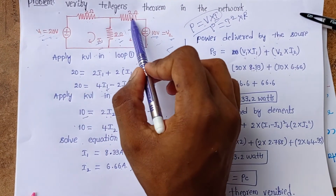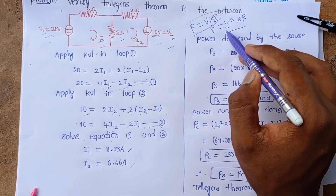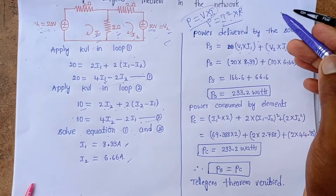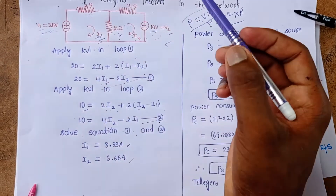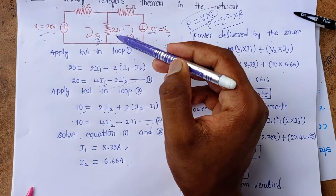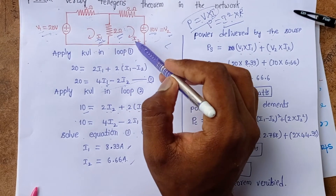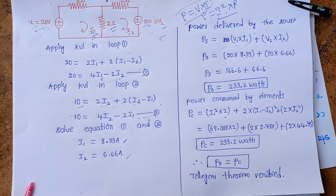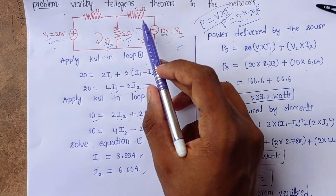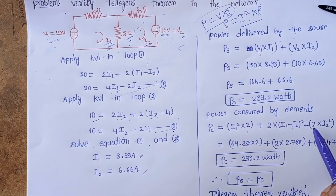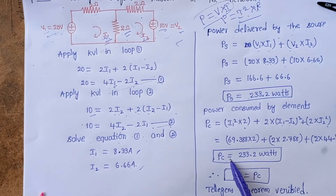Now we find the power consumed by the three 2-ohm resistors using P = I² × R. Power in resistor one: I1² × 2. Power in resistor two (shared): (I1 − I2)² × 2. Power in resistor three: I2² × 2. Substituting the values of I1 and I2 into these expressions and summing gives PC = 233.2 watts.